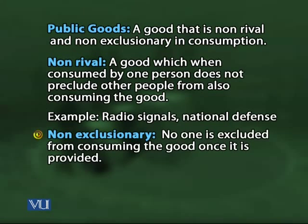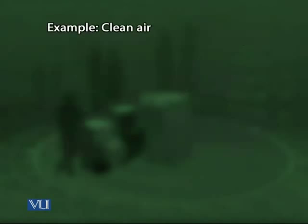By non-excludable or non-exclusionary consumption, we mean that no one is excluded from consuming the good once it is provided. For example, clean air — once the air is clean, you cannot exclude anyone or allocate it to a single person. Once these public goods are provided, people cannot be excluded from consuming them. Public goods are both non-rivalrous and non-excludable in consumption.